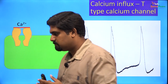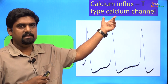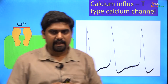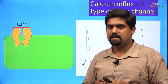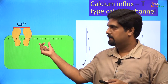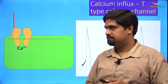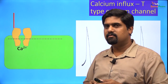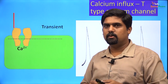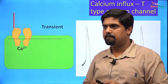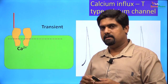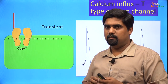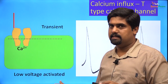Another calcium influx pathway is through T-type calcium channels. These are present in the SA node of the heart and are also voltage-gated calcium channels — closed at rest and opening when the membrane is depolarized. Calcium entry through these channels is very transient because the channels open and close very quickly; hence they are called transient or T-type calcium channels. Compared to L-type channels, T-type channels open at a more negative membrane potential and are therefore known as low voltage-activated calcium channels.